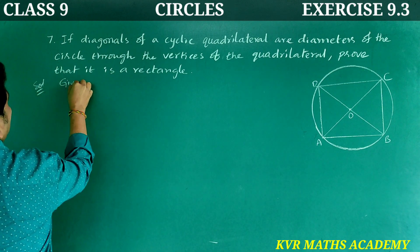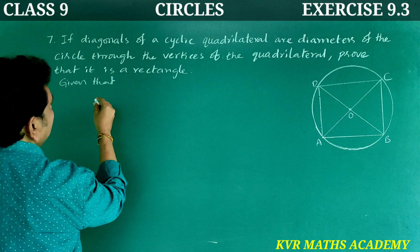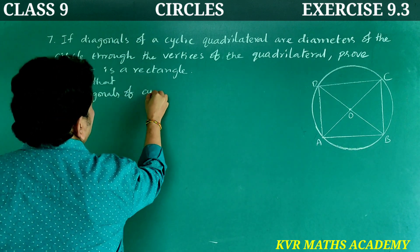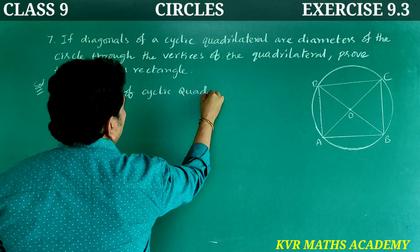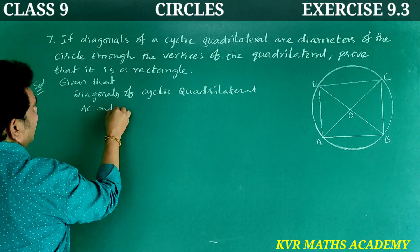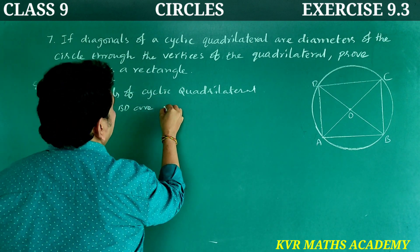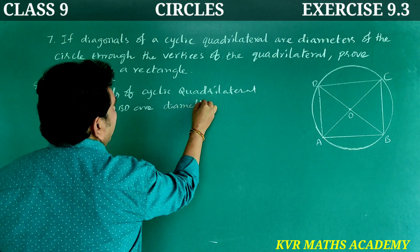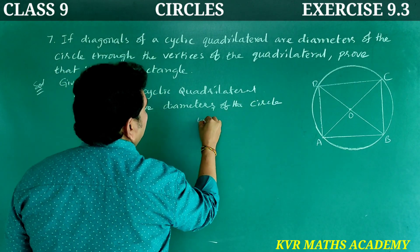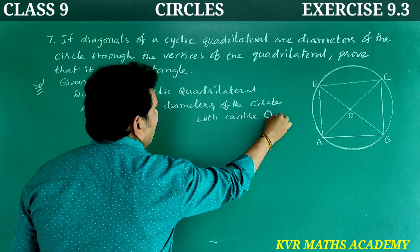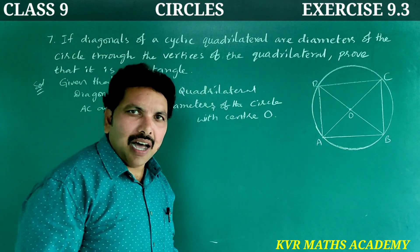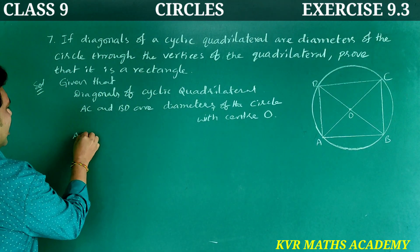Solution. Given: diagonals AC and BD of cyclic quadrilateral ABCD are diameters of the circle with center O. Since all diameters of a circle are equal, AC = BD.